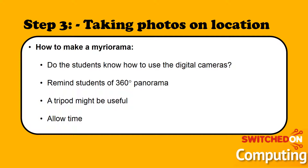Before they go out to their locations you obviously need to do your risk assessments. If you want to keep it close by it would be better for delivering the lesson. Make sure students know how to use their digital camera and remind them what a 360-degree panorama is. For students who aren't confident with the camera, make sure you've got a tripod. Beforehand you can create a mirrorama in class so they can see how the horizontal lines link together. Give students plenty of time to take these images as some may turn out blurry and they'll want to delete and retake.